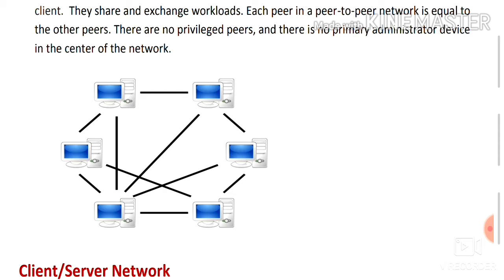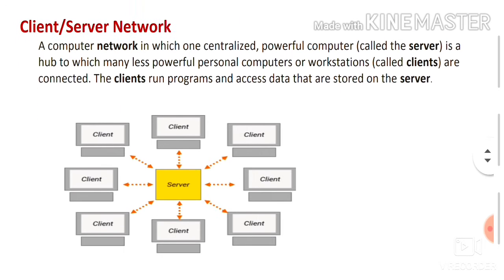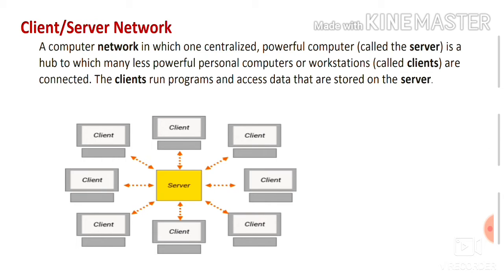Now let's talk about the second type, which is the client-server network. A client-server network is one in which there is a head computer that works as a server. The other computers connected to it are called client computers. If a client computer needs a file, a resource, or a service, it does not request another client computer directly — it sends the request to the server.